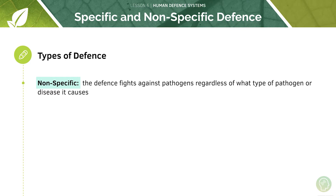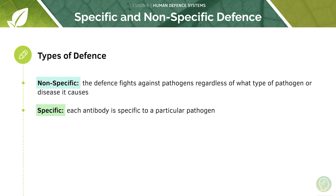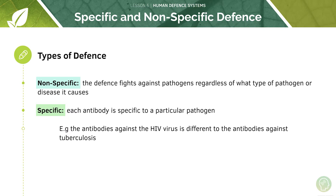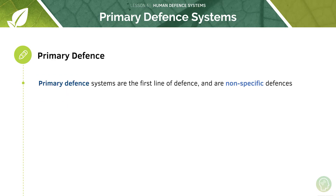Just to recap: in a non-specific defence mechanism the defence fights against pathogens regardless of the type of pathogen. In contrast, in a specific type of defence you get a very specific mechanism against a particular pathogen and these are not interchangeable between pathogens. Primary defence systems are the first line of defence and are non-specific defences — they aim to stop entry of pathogens into the body.